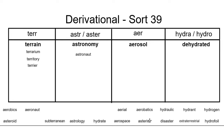An asterisk is a small star that is often put next to different words. This symbol is used to show that something is special about the word or that there is a footnote or something else the author wanted to tell you. You can find an example of this symbol above the 8 key on your keyboard.